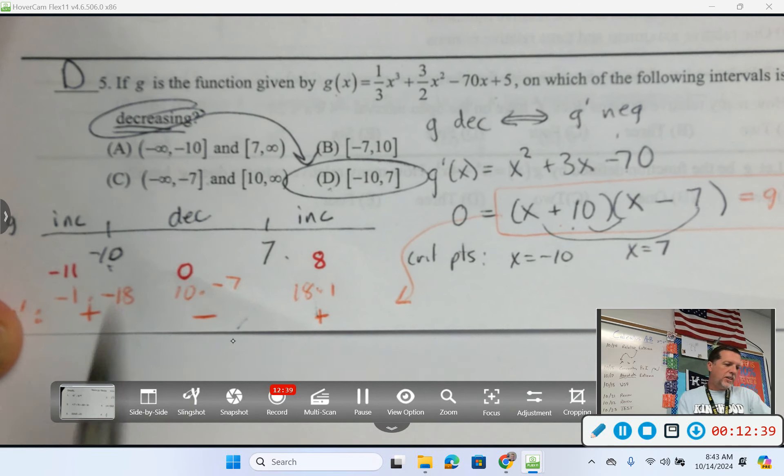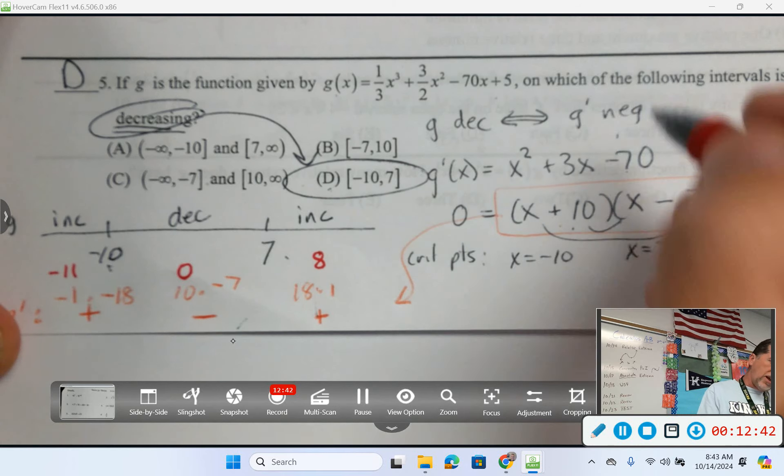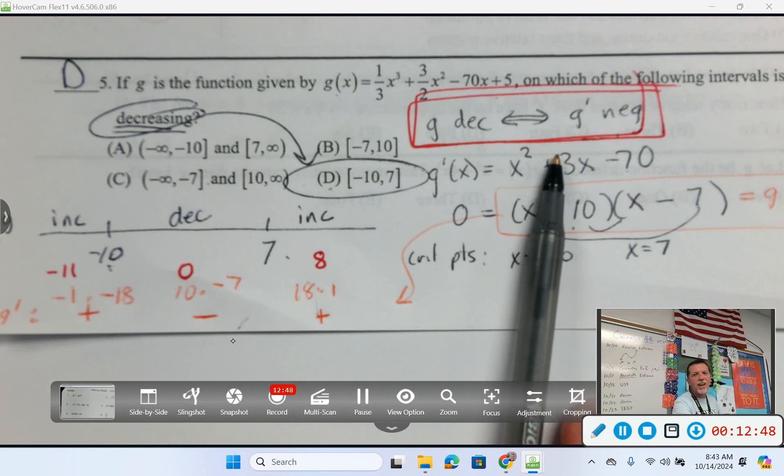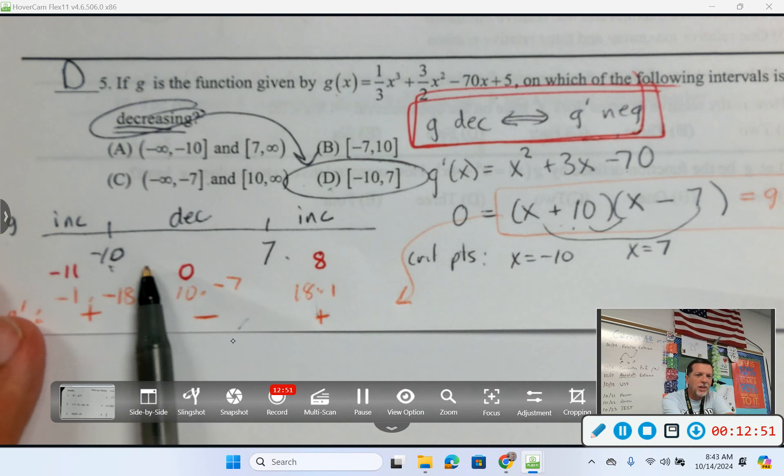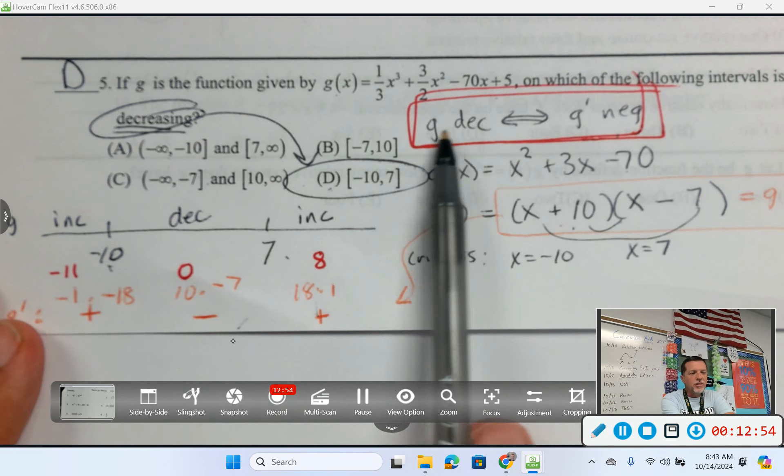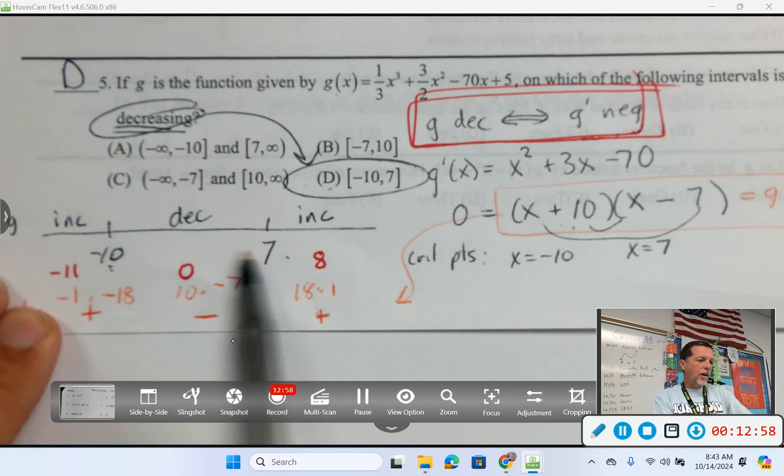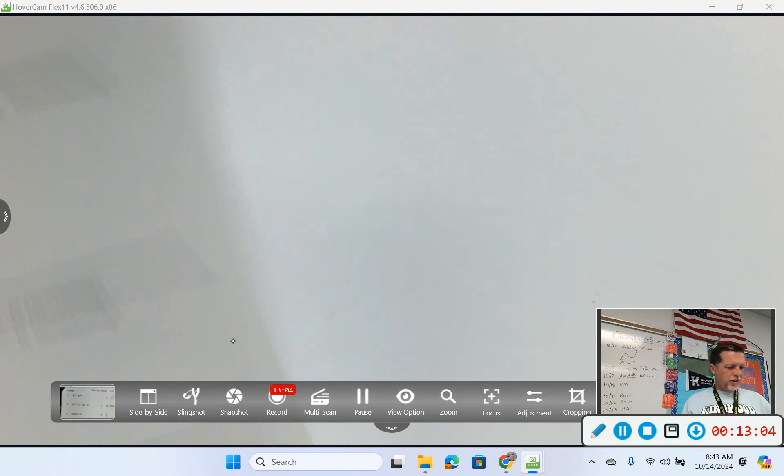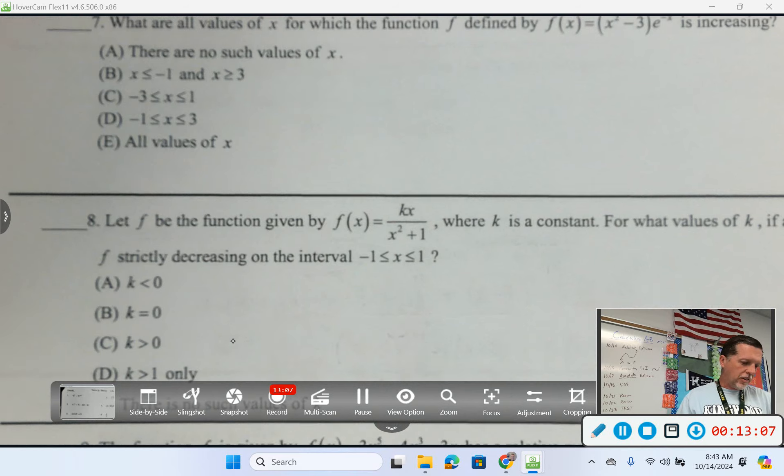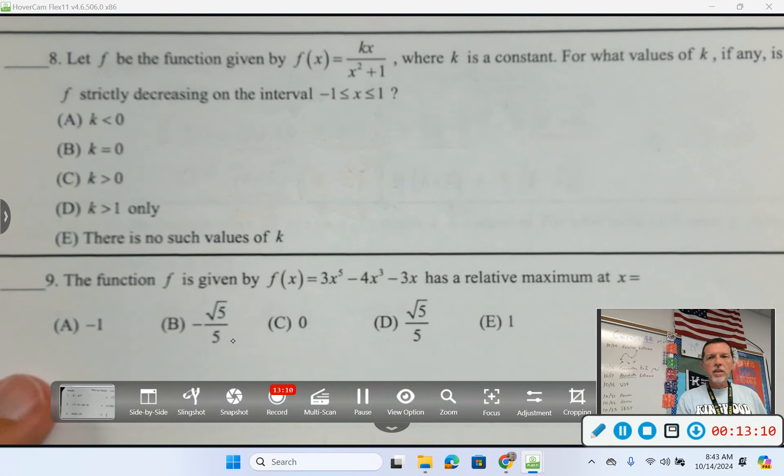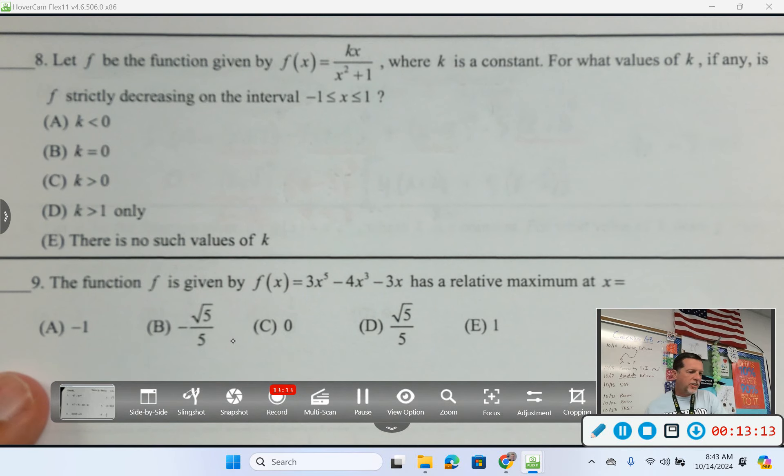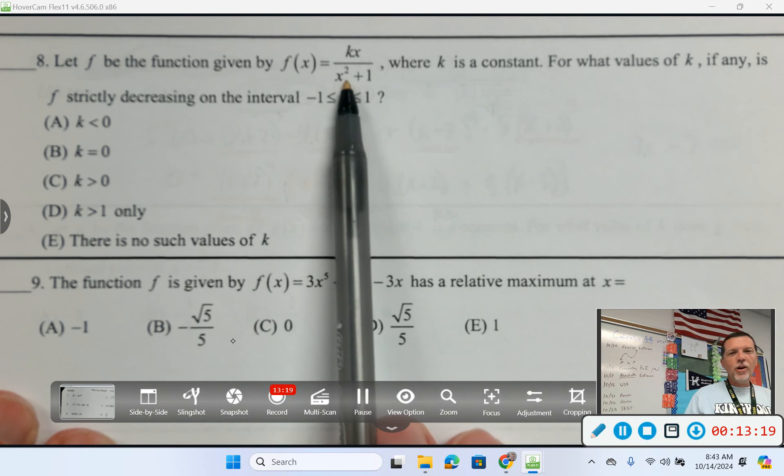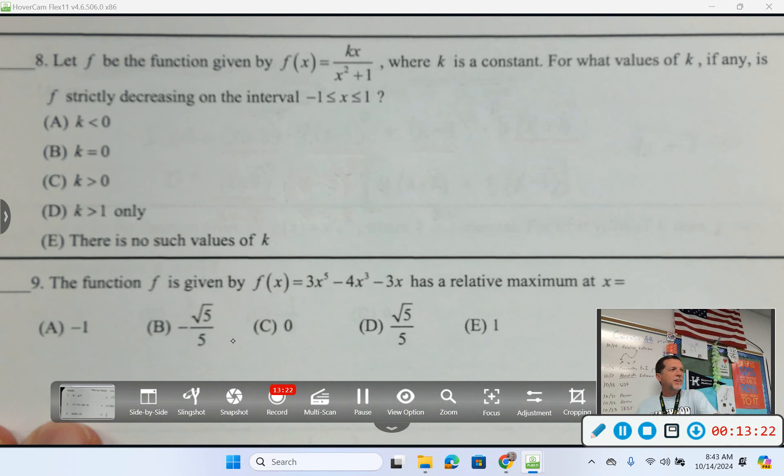Okay, what we reviewed there was, decreasing means g prime is negative. We have to figure out where g prime was negative. We figured out where it was zero. We put those on a number line. We tested the intervals. Continuing with this connection between g is decreasing, g prime is negative. Figure out where we were decreasing. All right, last one I want to do is number 8. Again, now it's crazy because it's all out of order. Let f be the function given by this thing. Uh-oh. What rule am I thinking even before I read the rest of this problem? Quotient rule.